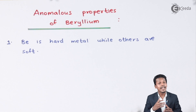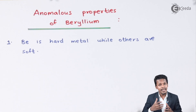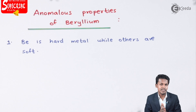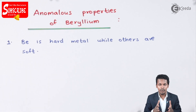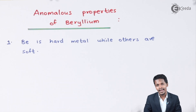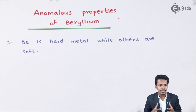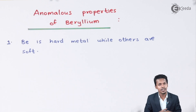The first point is that beryllium is a hard metal while the others are soft. The reason behind that is beryllium is the smallest element of the whole group 2, and because of the smaller atomic size the nuclear charge is also more, because of which this metal is very hard. That's the reason its melting point and boiling point are also very high.